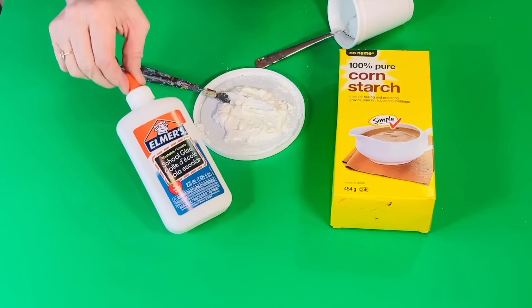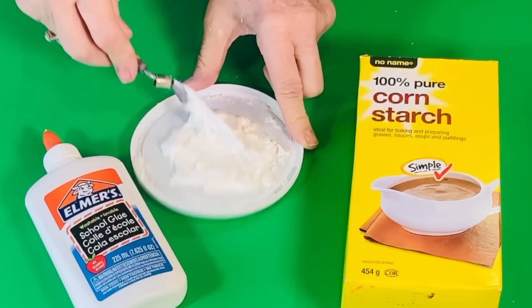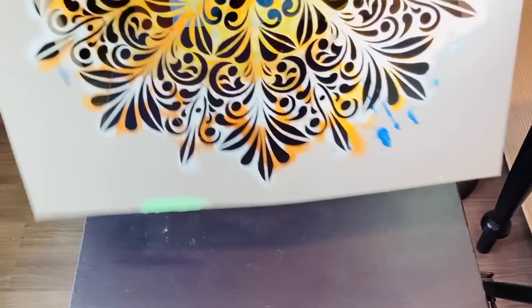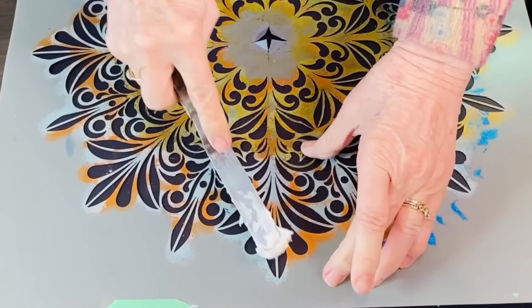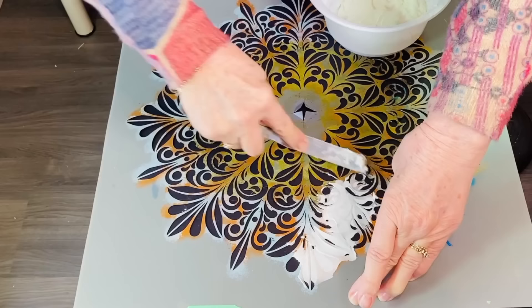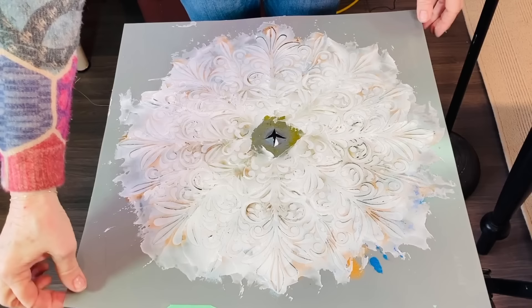So I put two spoons of cornstarch and two spoons of Elmer's glue, and that's what we're looking for. I'm going to use this really lovely mandala stencil. Going very carefully, I'm now going to apply it. The whole stencil is covered and now for the moment of truth. Very carefully lift this off.